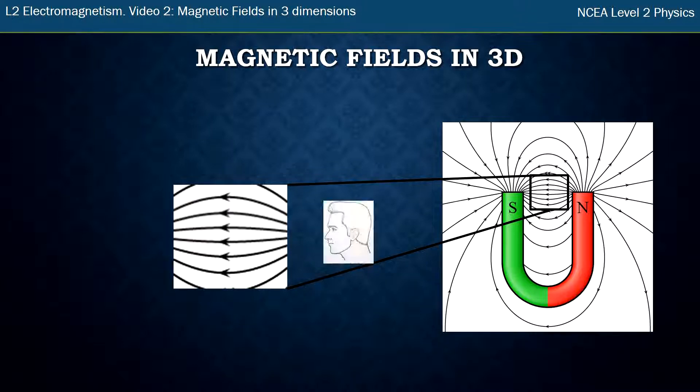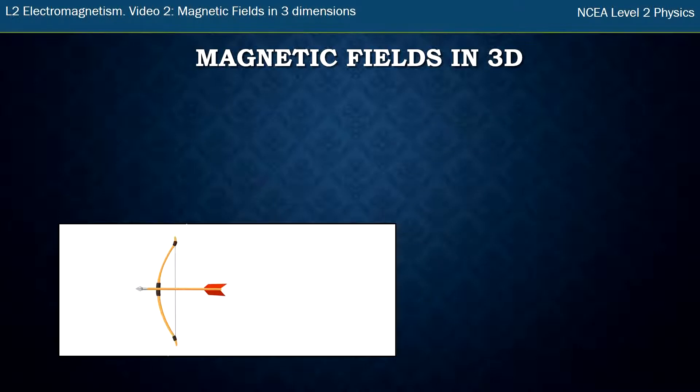But what about if you're thinking about a field that's moving away from you? So this is a person looking and you see this field moving away from them. How do you draw that? And so what we use is the bow and arrow notation.